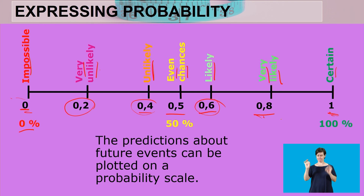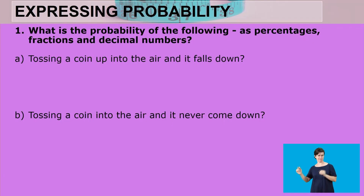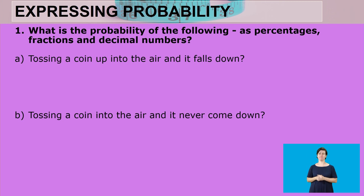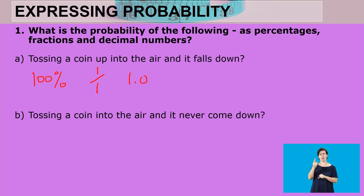Certain means we are 100% sure that thing will definitely happen. The prediction about future events can be plotted on this probability scale. For example: tossing a coin up into the air and it falls down — we are definitely sure it will come back down. As a percentage that's 100%, as a fraction it's 1 over 1 which equals 1, and as a decimal number it is 1.0.